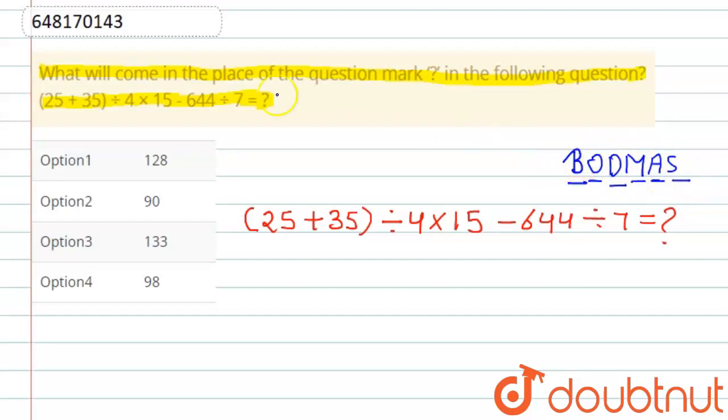First of all, let's solve the bracket. 25 plus 35 equals how much? That is 60 divided by 4 into 15 minus... Now division: 644 divided by 7, that is 92, equals question mark.